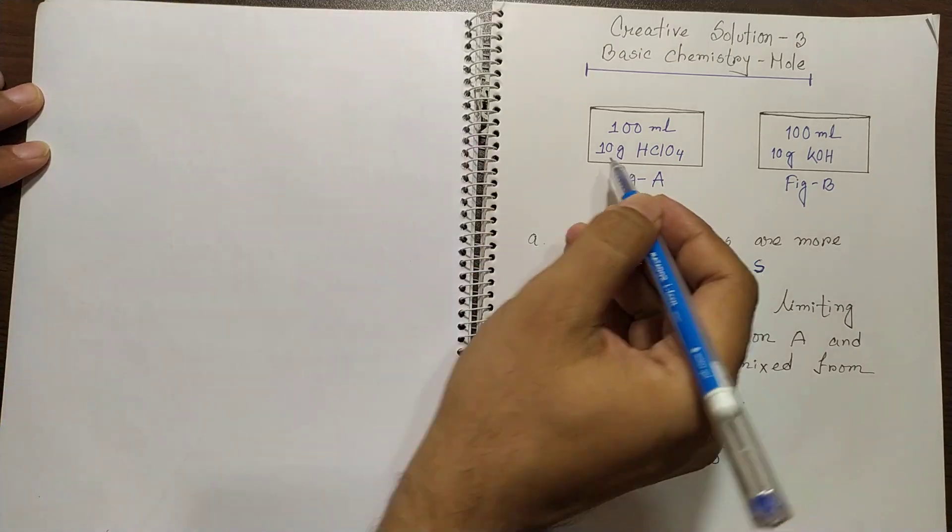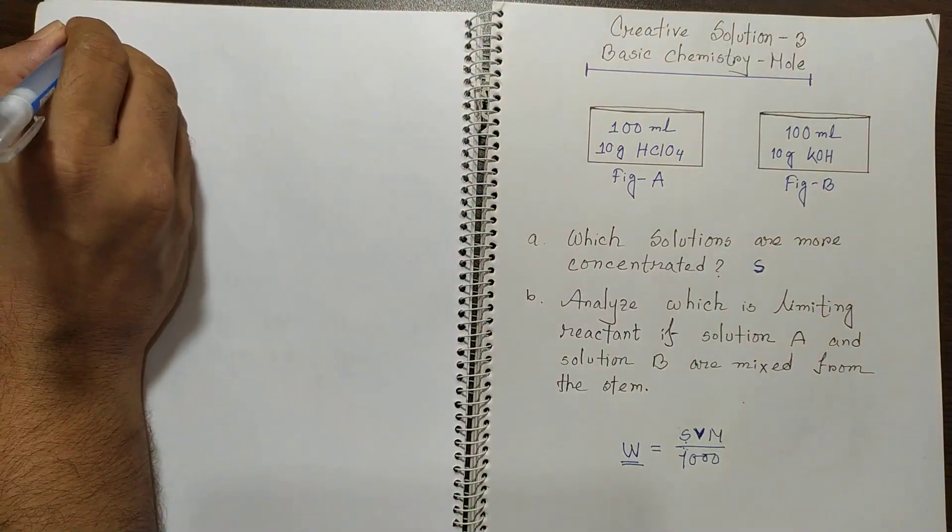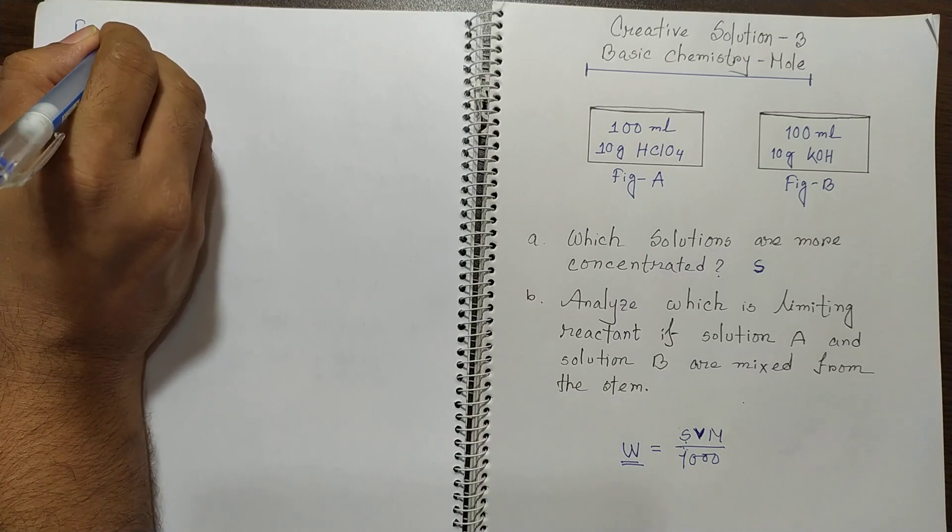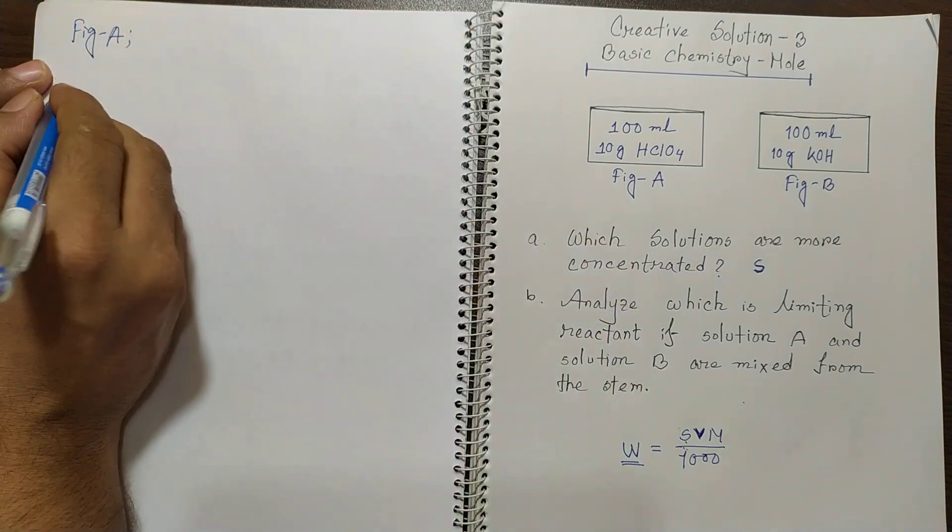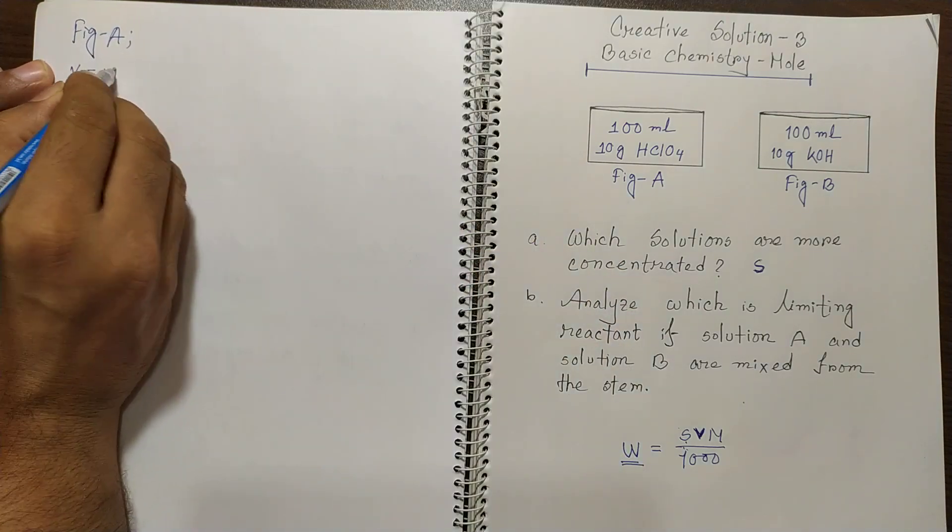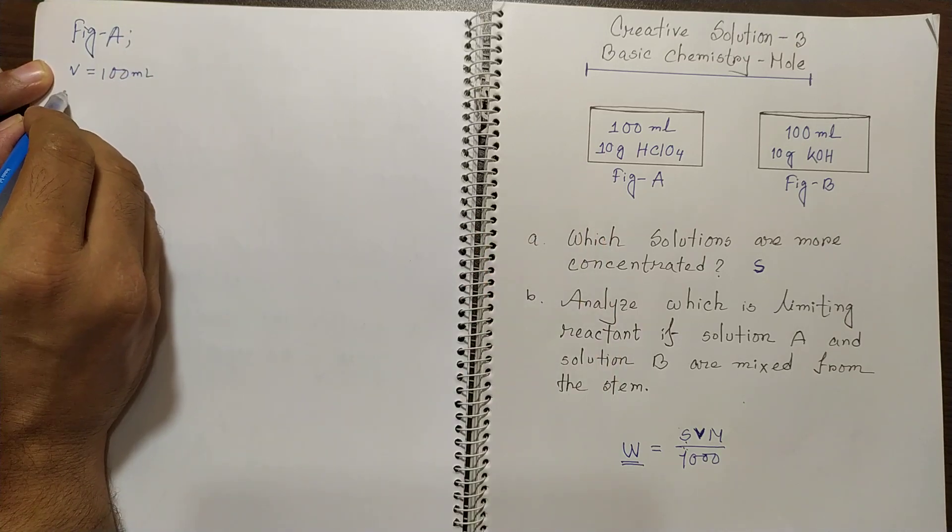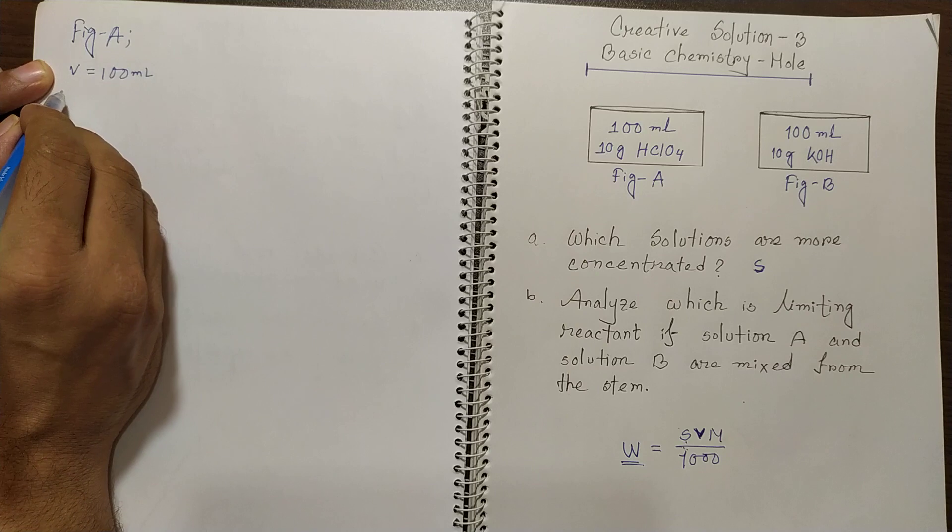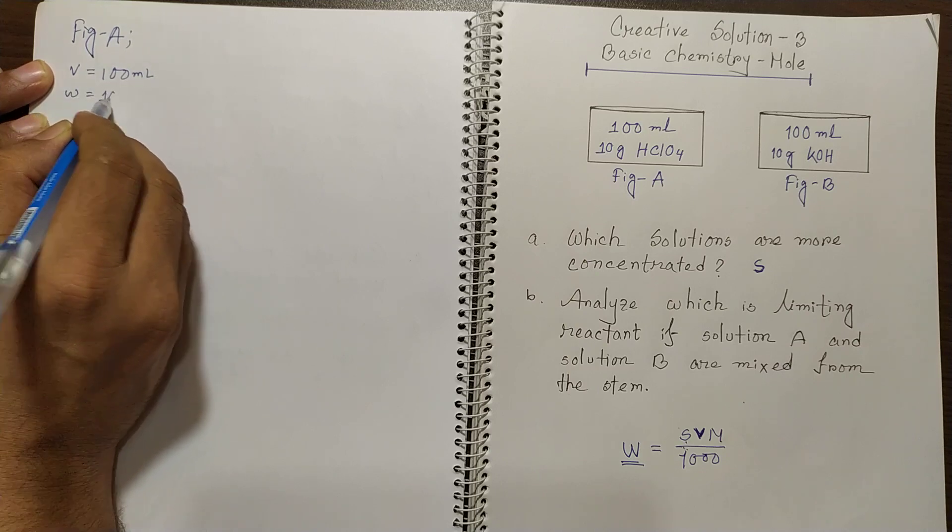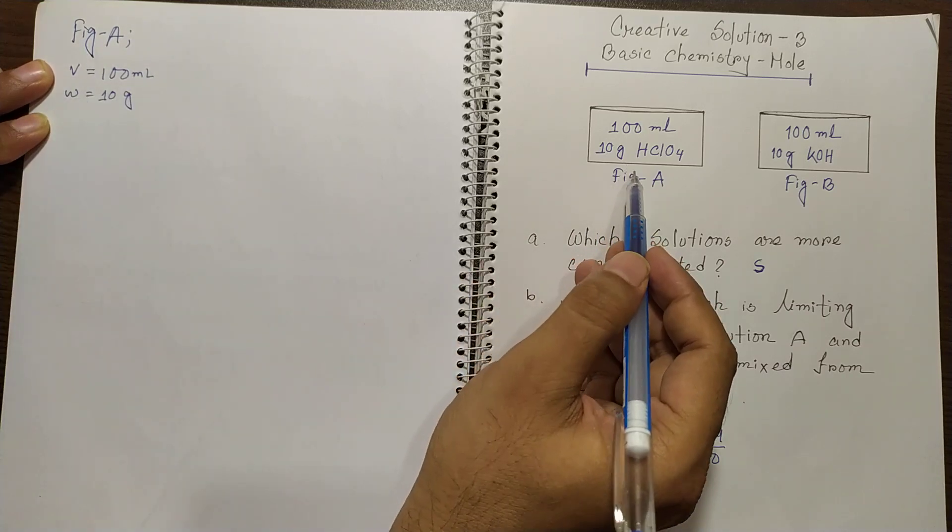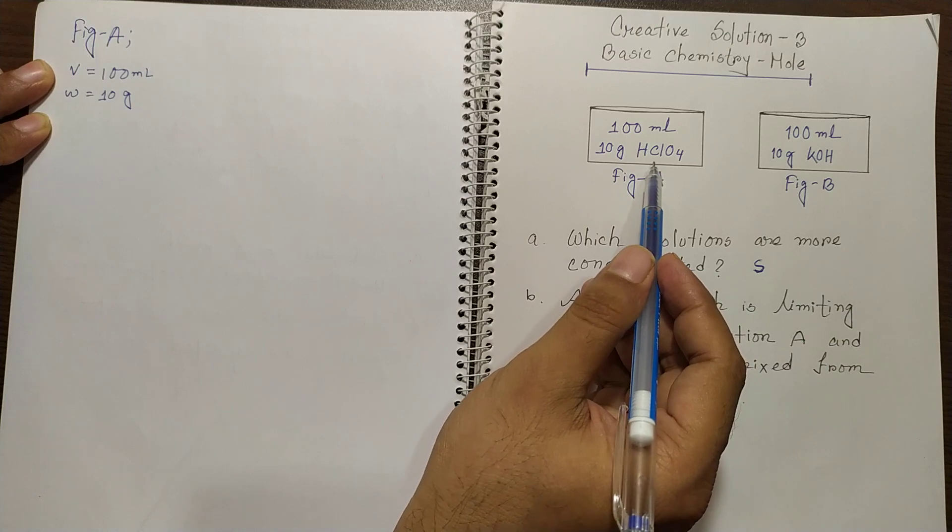So you see that in figure A, what is the data given. This V is 100 ml and then this is 10 gram is W. So the W is 10 gram and you see that this is perchloric acid.